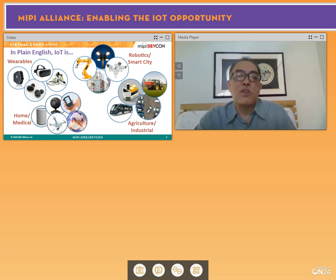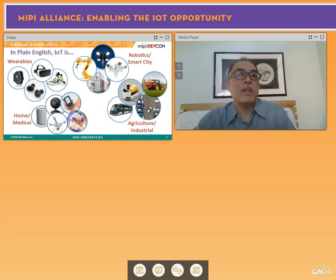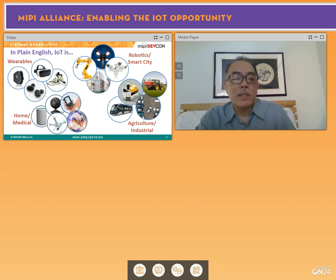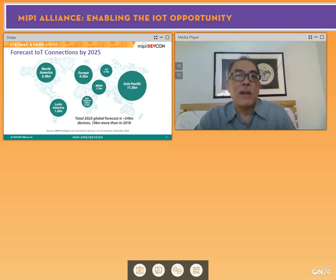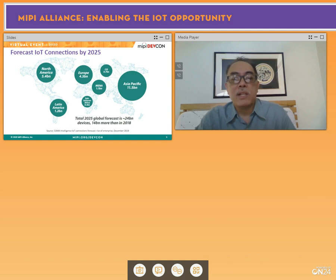IoT expands to so many different markets and places. Looking at the forecast for IoT connections in 2025, it is gigantic — almost doubling in connections in just a decade. Asia Pacific is driving things with expected over 11 billion connections, followed closely by North America and Europe. IoT is becoming a very big thing, especially as it's about collecting data and providing the devices to enable that.